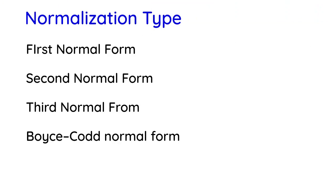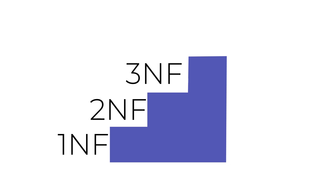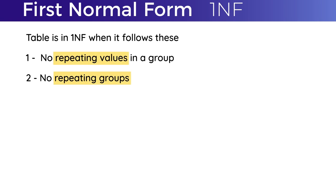These are the normalization types we will talk about. When considering normalization forms, you cannot bypass the previous form. You have to go through First Normal Form, then Second Normal Form, and then eventually Third Normal Form. You cannot bypass the first two and directly go to the third one. For a table to be in First Normal Form, it needs two criteria — two things that should not happen in the table: no repeating values in a group and no repeating groups in the table.